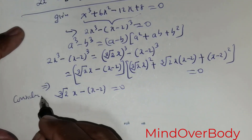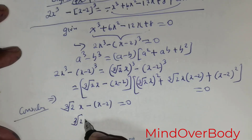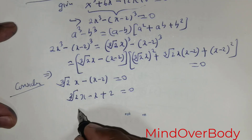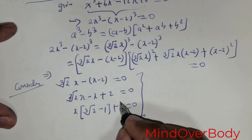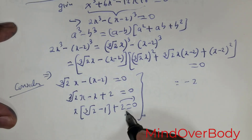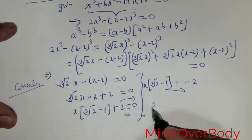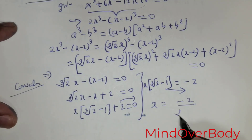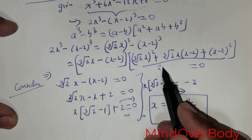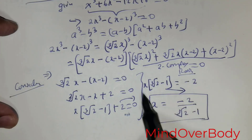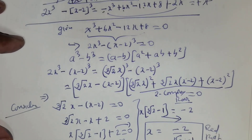Considering the first factor: cube root of 2 times x minus x minus 2 equals 0. Factoring out x: x times the cube root of 2 minus 1 plus 2 equals 0. Moving 2 to the other side gives x times the cube root of 2 minus 1 equals negative 2, so x equals negative 2 over the cube root of 2 minus 1. This is the one real root. The second factor yields two complex roots. Thank you students — that completes our lesson on solving cubic equations.